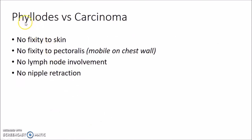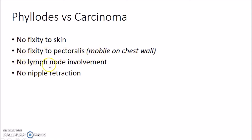How do you differentiate Phyllodes Tumor from carcinoma of the breast? Phyllodes Tumor has no fixity to the skin and no fixity to the pectoralis — it will be mobile on the chest wall. There will be no lymph node involvement and no nipple retraction in case of Phyllodes.